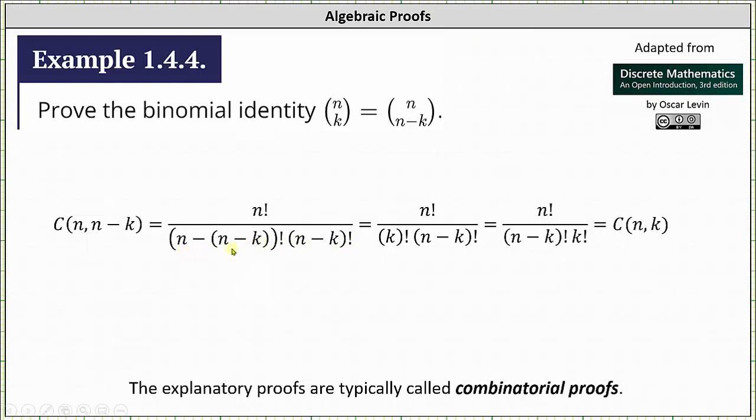From here, n minus the quantity n minus k simplifies to k, giving us a denominator of k factorial times n minus k factorial.